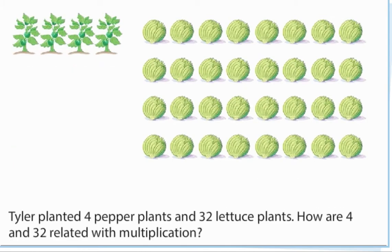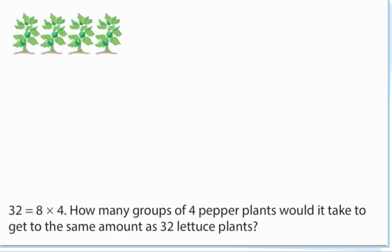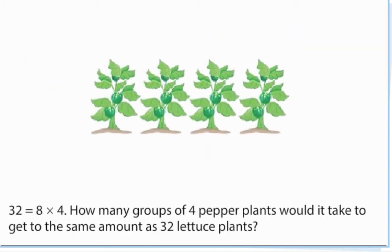Tyler planted four pepper plants and 32 lettuce plants. How are 4 and 32 related with multiplication? 32 equals 8 times 4.